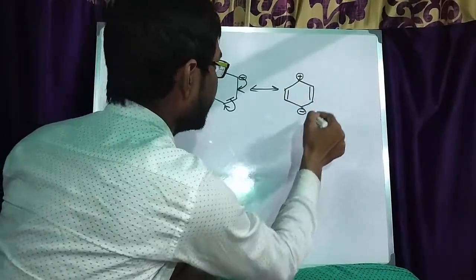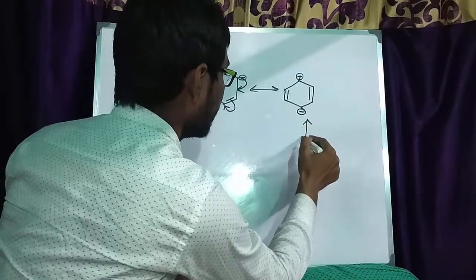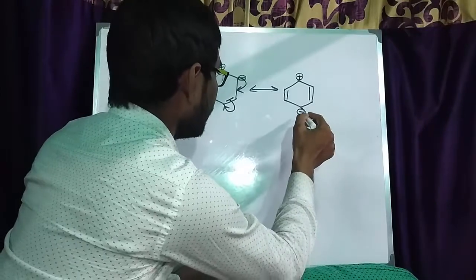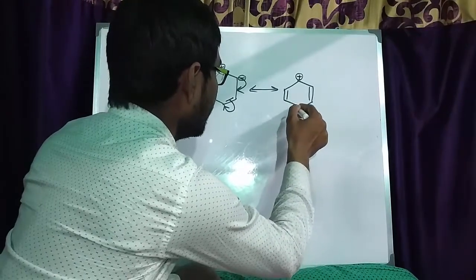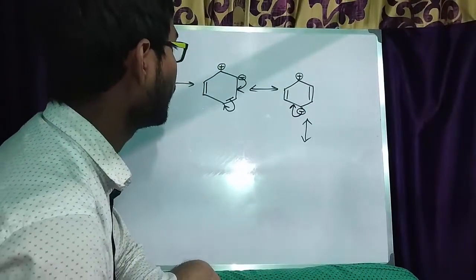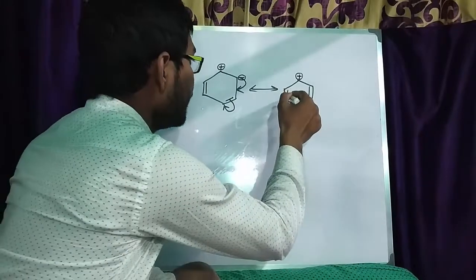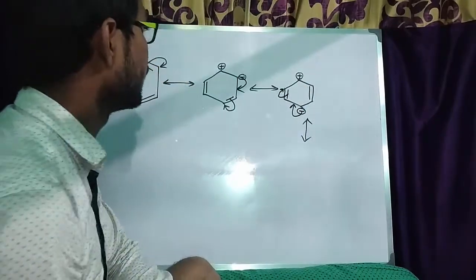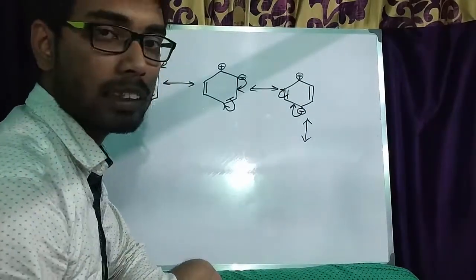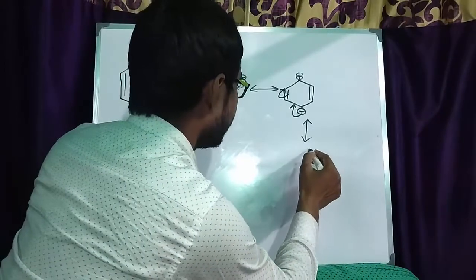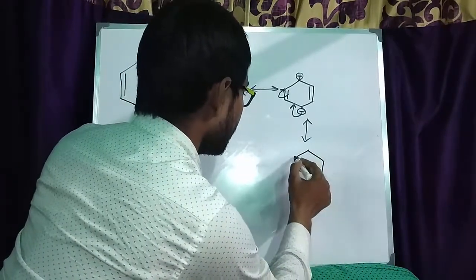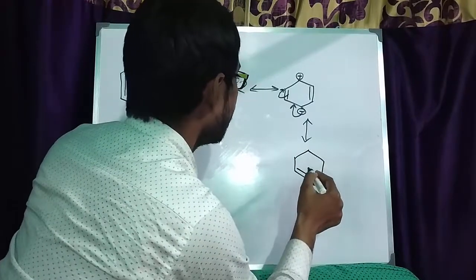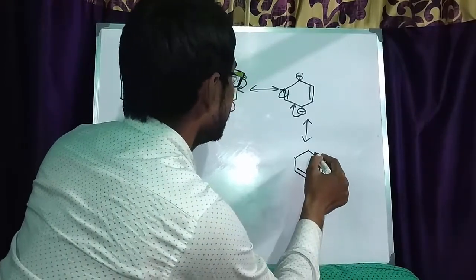And in the third step, this negative charge will create a bond on this position. And this bond will be on this carbon to satisfy the covalency of the carbon atom. And here, this is the double bond. The bond is here as usual.